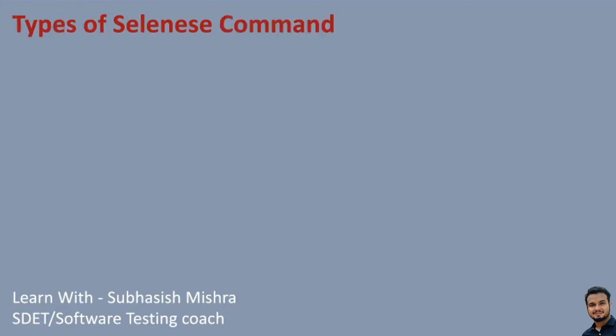Then we will see what are the different types of Selenese commands. First, we will understand what a command is in Selenium. A command in Selenium describes what Selenium has to do. Selenese commands are classified into three types: actions, accessors, and assertions.